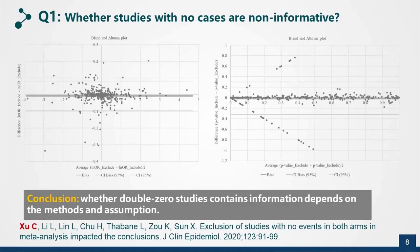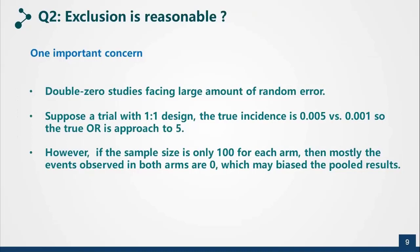This also suggests that whether double zero studies contain information depends on the differences and the assumptions. There is one important concern statisticians raise about double zero studies: they argue that double zero studies face a large amount of random error. For example, suppose a trial with a one-to-one design where the true event risks are 0.005 versus 0.001, giving a true odds ratio of 0.5. However, if the sample size is only 100, mostly the observed events in both arms are zero. They claim this biases the results.